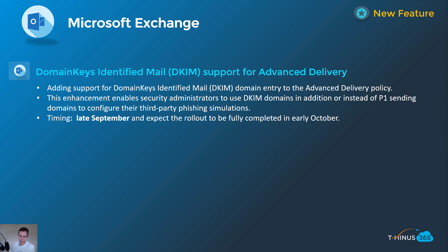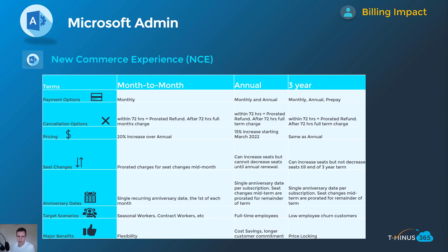The final one is some big, heavy news that's been rippling throughout the community, related to the New Commerce Experience. I made a whole video and blog on this — it's a lot to unpack, so definitely check out those resources. Essentially, Microsoft is pushing you into an annual contract for their services, because the month-to-month contract is going to see a 20% increase in price. In addition, they are removing the prorated cancellation feature after the first 72 hours, so they're making it so you don't really decrease during your term.